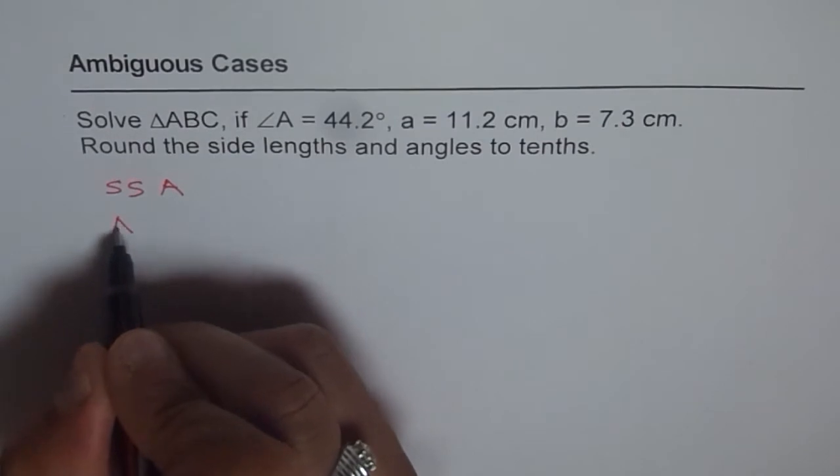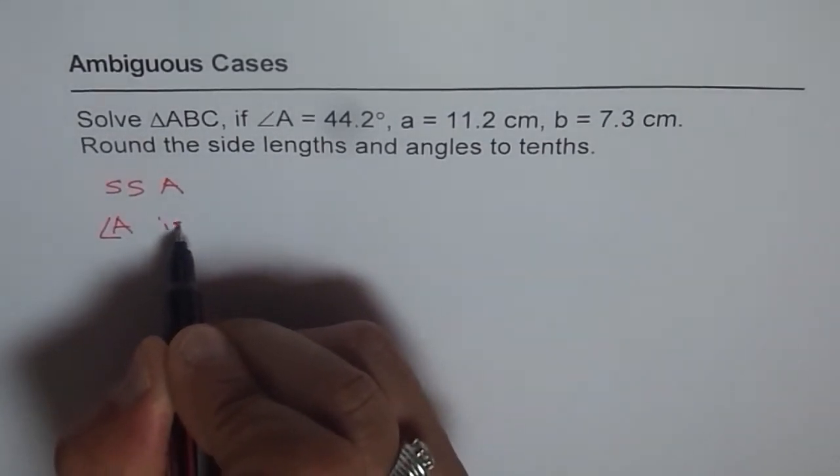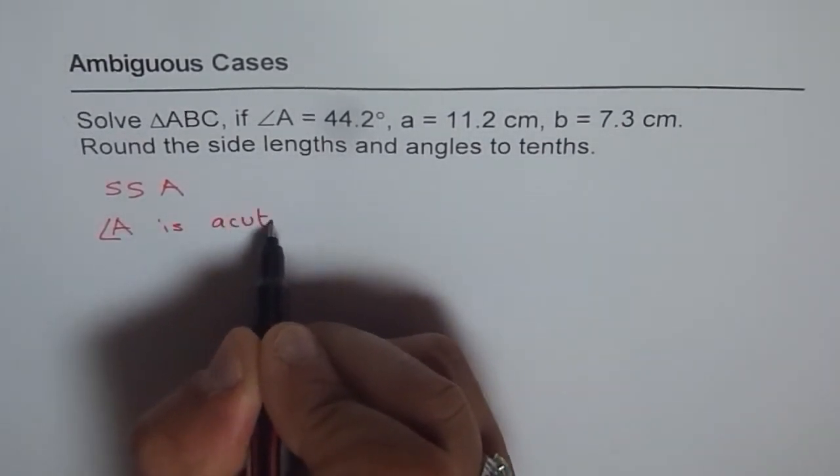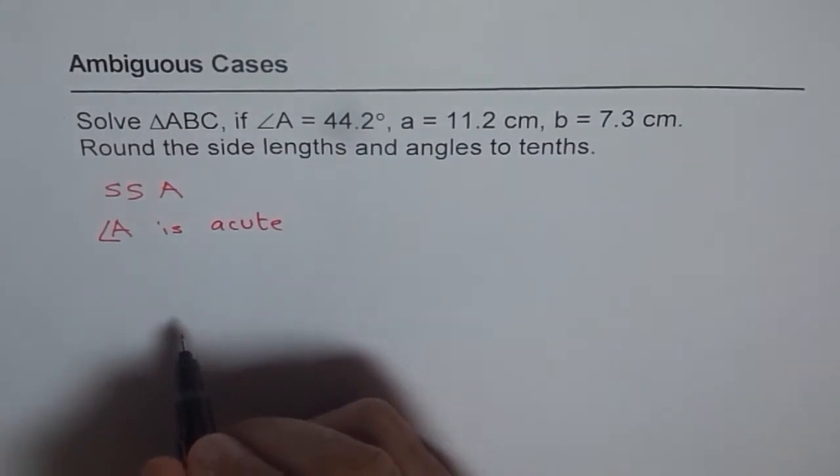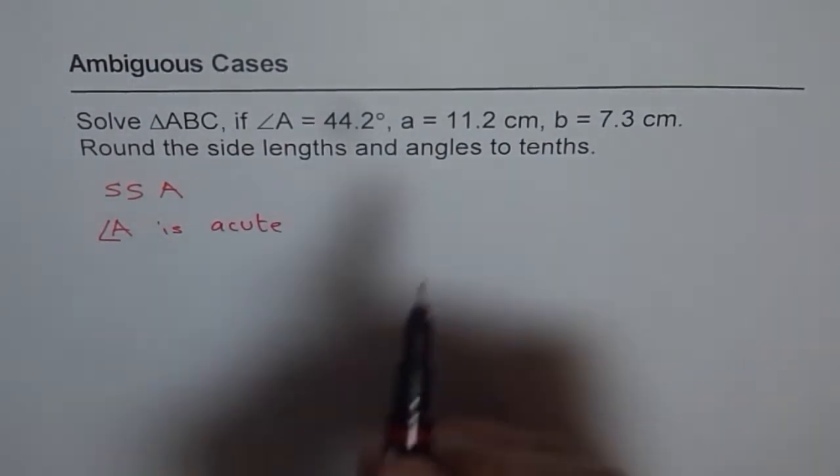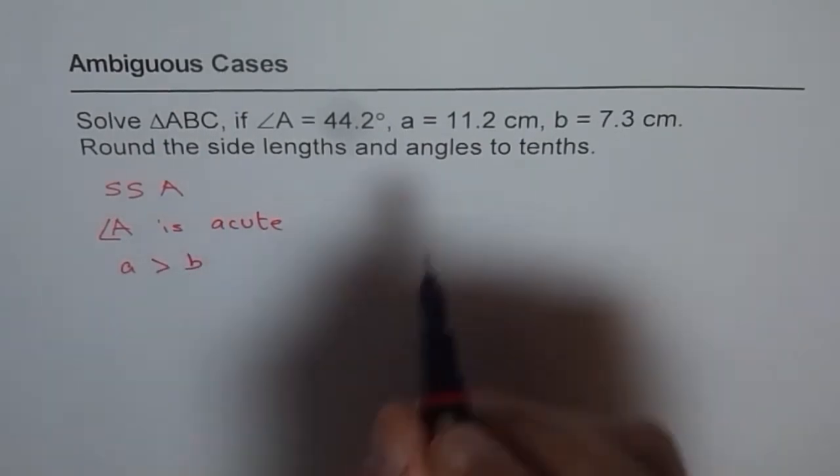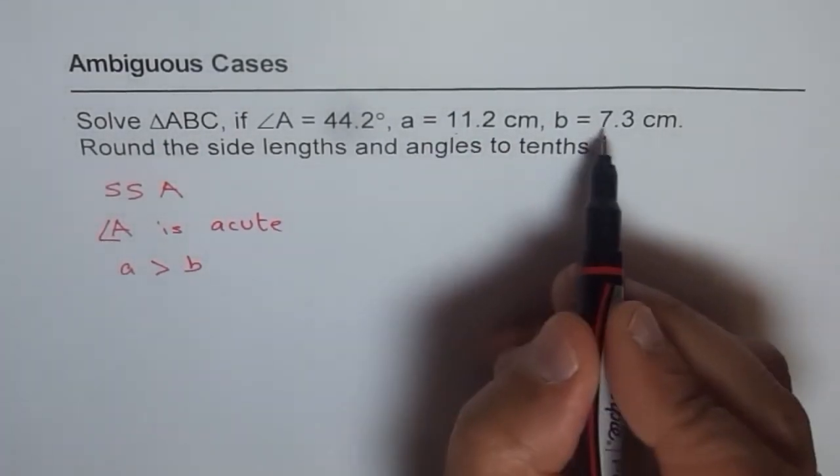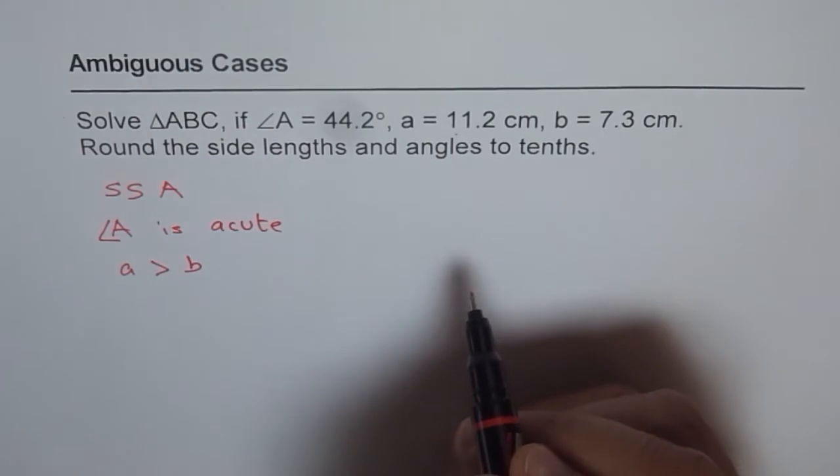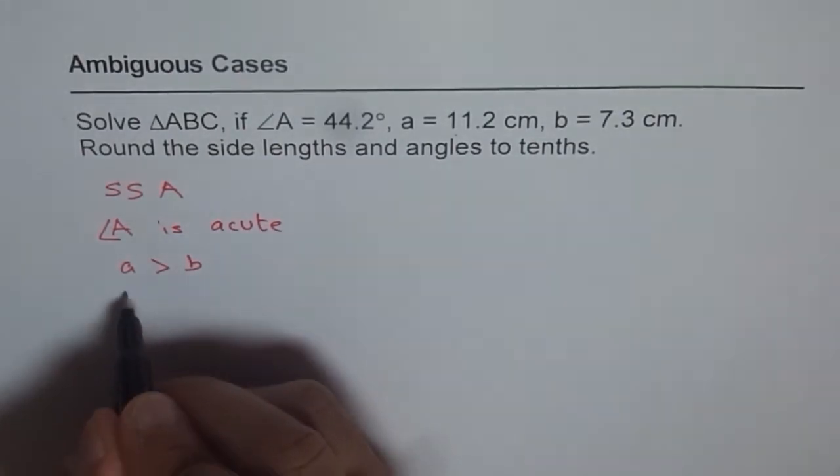We know A is acute, angle A is acute, so there could be an ambiguous case. Now to test it out, what should we do? Well in this particular case we know that a is greater than b since a is 11.2 and b is just 7.3. Therefore, there is only one solution.